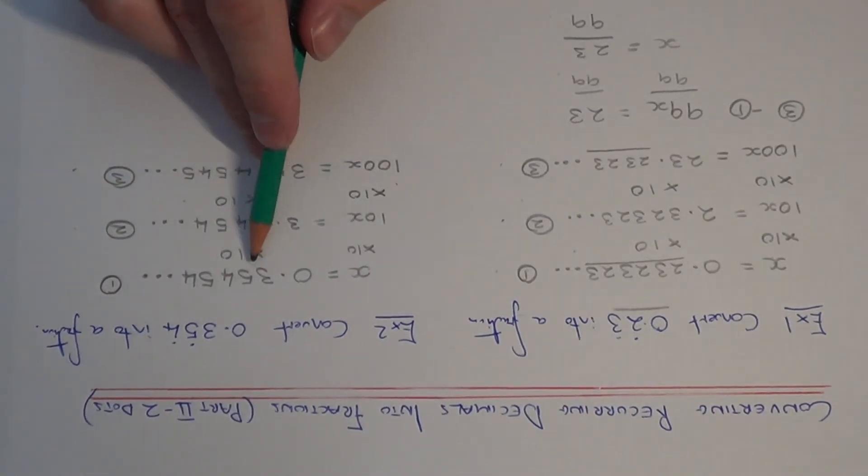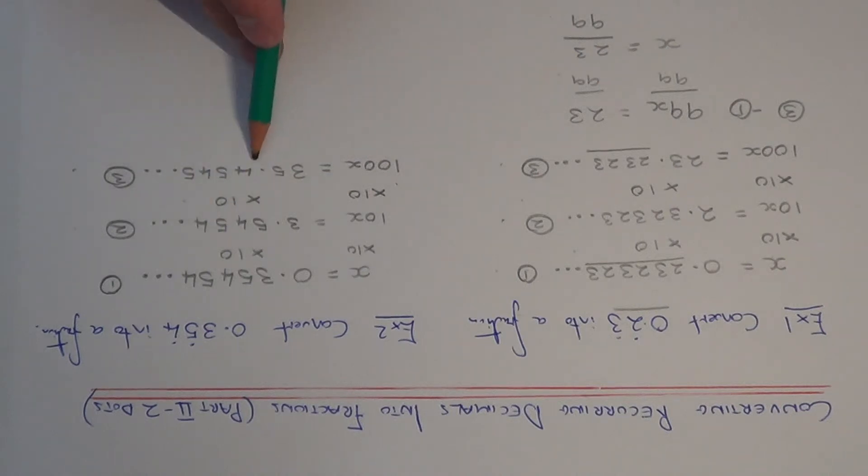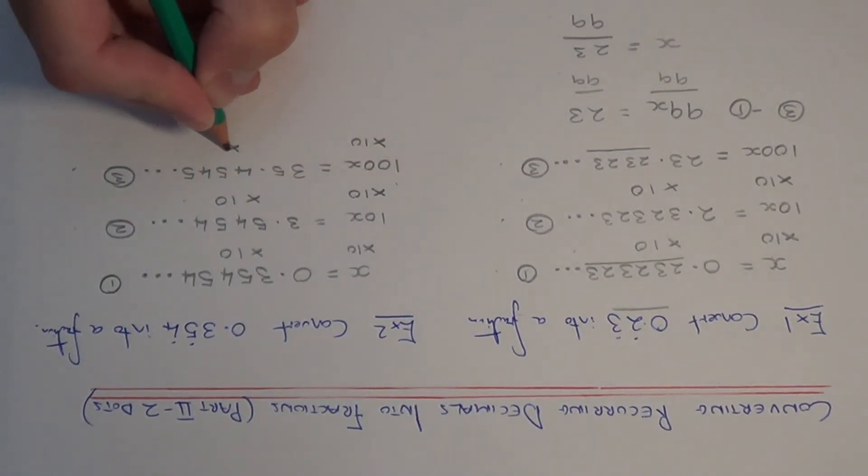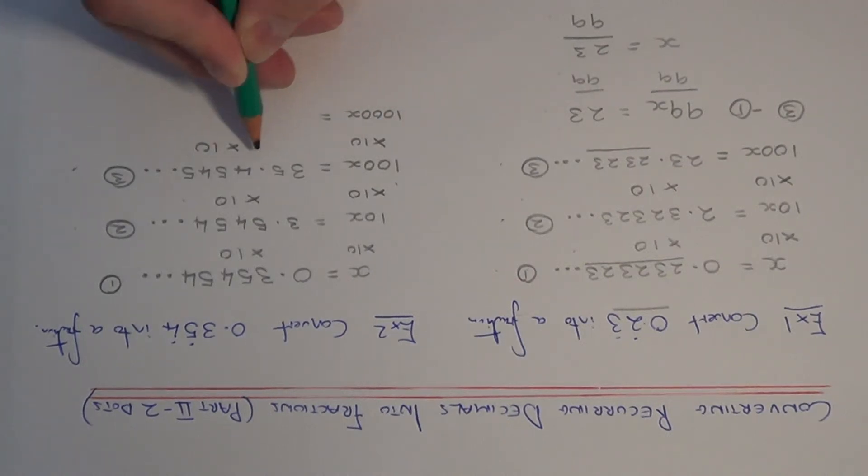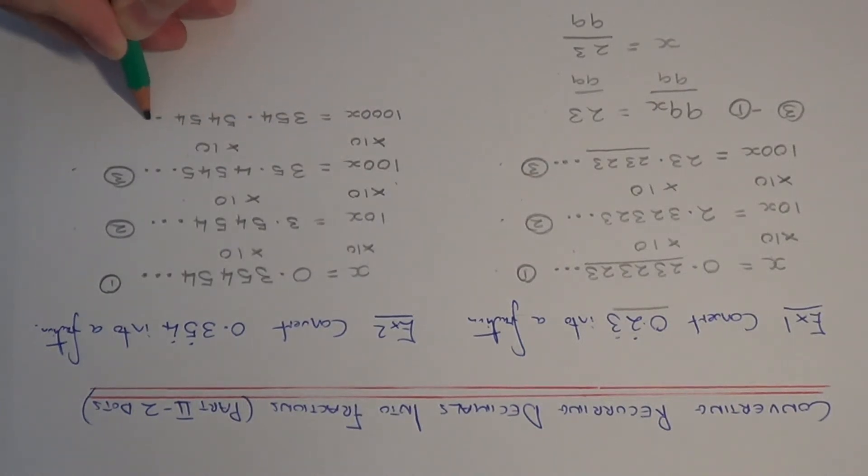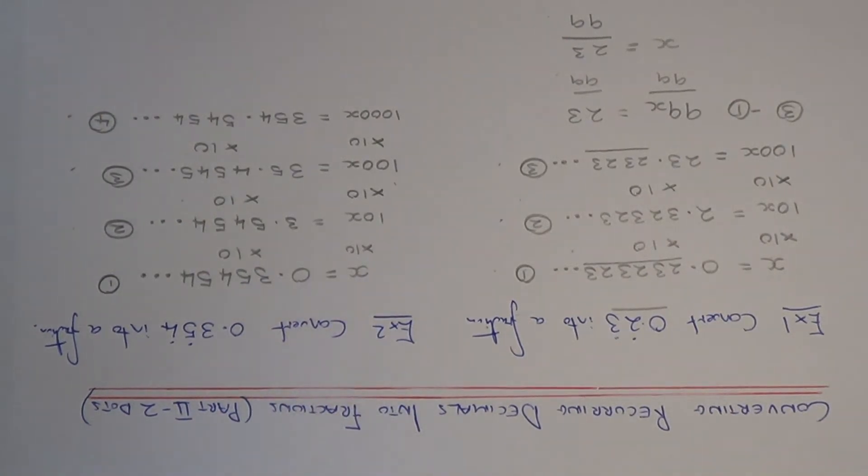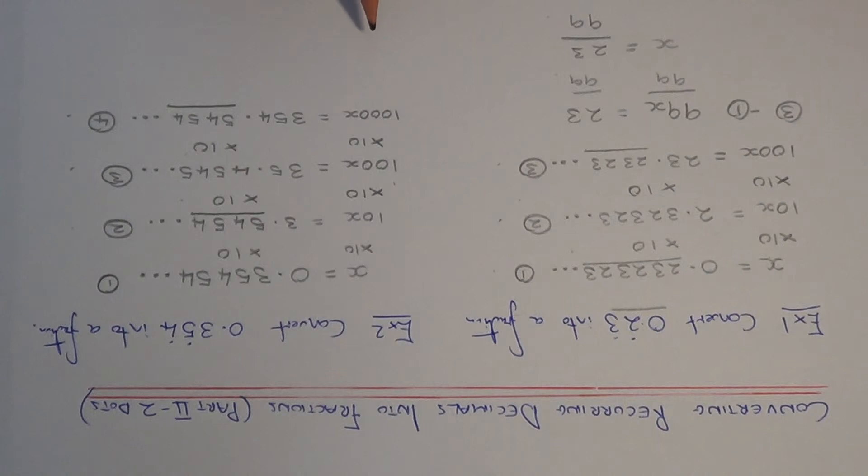Right now do any of these decimals match? I don't think they do. So what I need to do now is multiply by 10 again to give me a fourth equation. So 100x times 10 is 1000x. And if I multiply this by 10 I get 354.5454 etc. So this is my fourth equation. Now if you notice that the numbers after the decimal point match the numbers after the decimal point in my second equation.